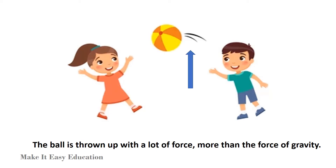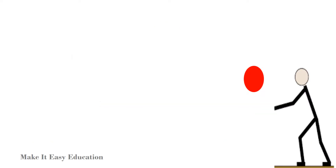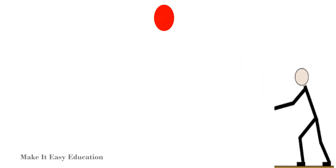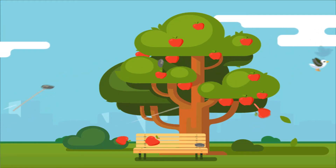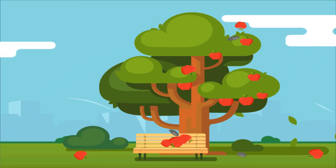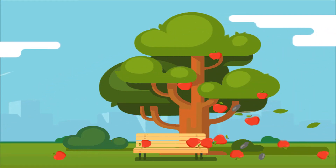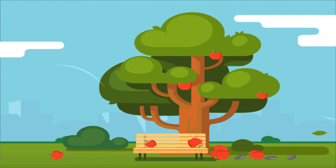When you throw a ball up, you throw it with a lot of force — more than the force of gravity — so it rises. As the ball moves up, it loses this force, and then gravity pulls it down. Similarly, leaves and ripe fruits always fall down to the ground due to the force of gravity.